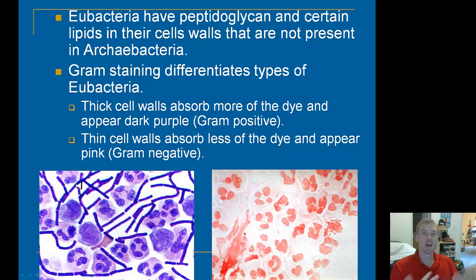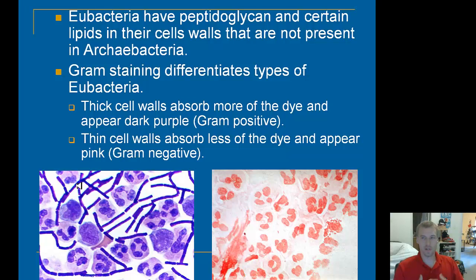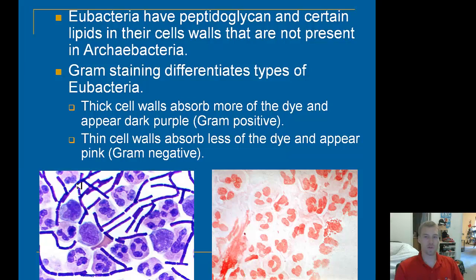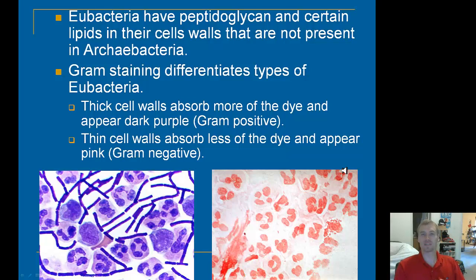When we talk about cell walls, eubacteria have peptidoglycan, which is a mix of proteins and carbohydrates — a very strong sugar-protein mix. They also have lipids in their cell walls that are not necessarily present in archaebacteria. We can separate eubacteria into two types: gram-positive or gram-negative. Gram-positive bacteria appear purple, and gram-negative bacteria appear pink. In general, gram-positive bacteria tend to be more disease-causing and do more damage.